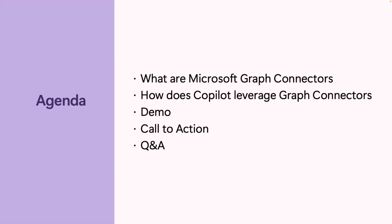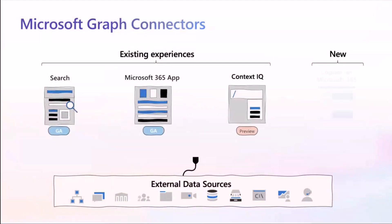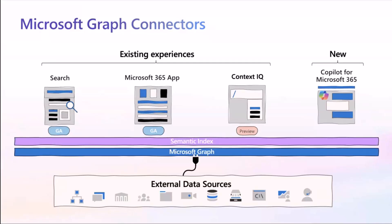We're going to talk about what it is and how co-pilot leverages Graph Connectors, and I'll show a brief demo. Graph Connectors are not new — that's the first part of the demystification. This is something that's already been out there. You may already be using this and you don't even know. You may be doing searches inside SharePoint or portal.office.com and getting results back, maybe in a different vertical or with a little icon off to the left — that could potentially be Graph Connectors.